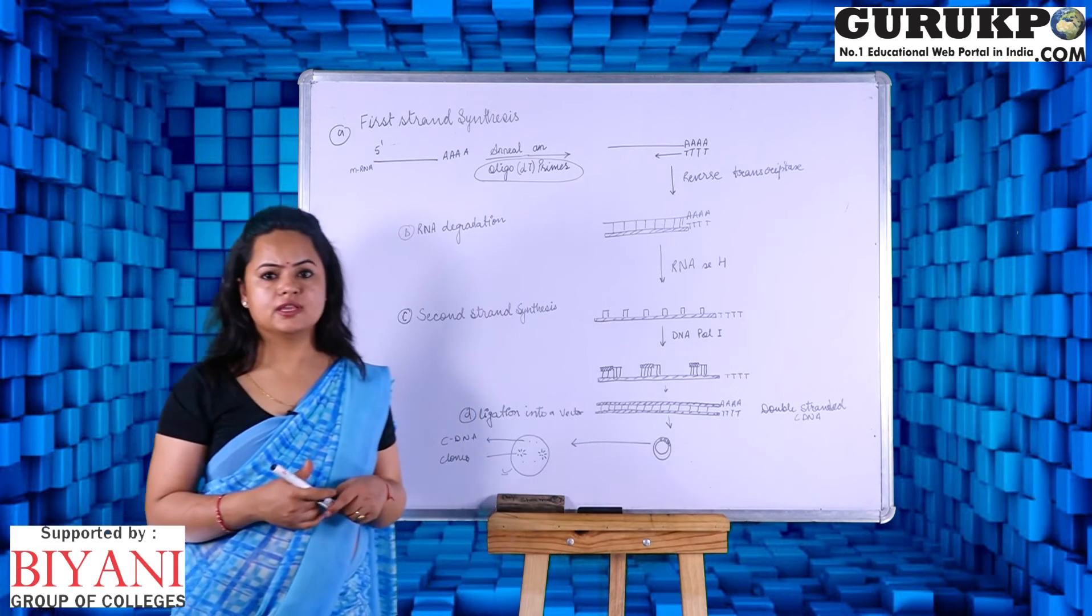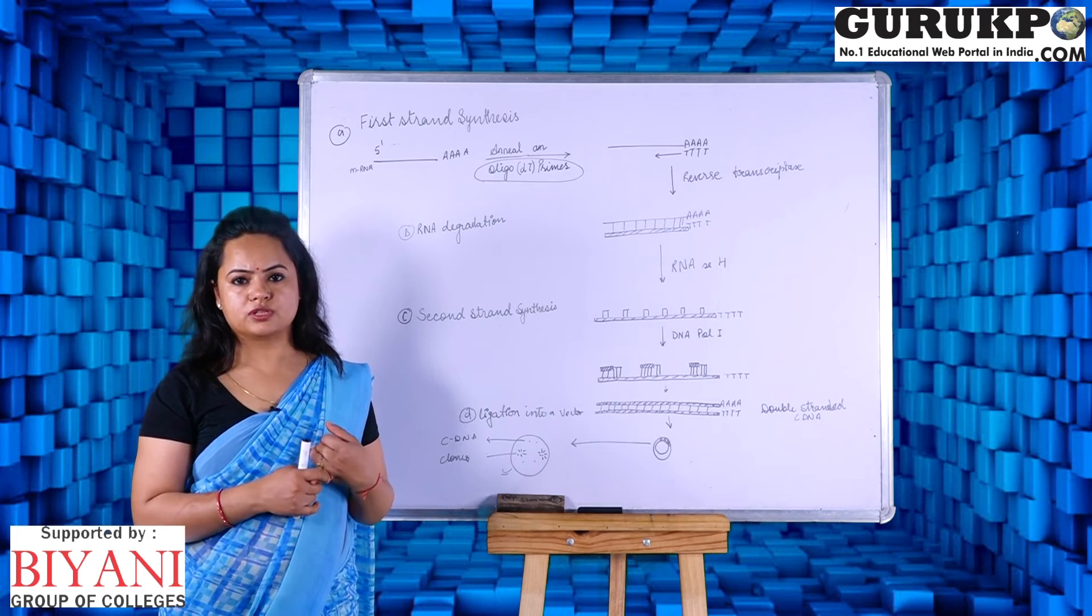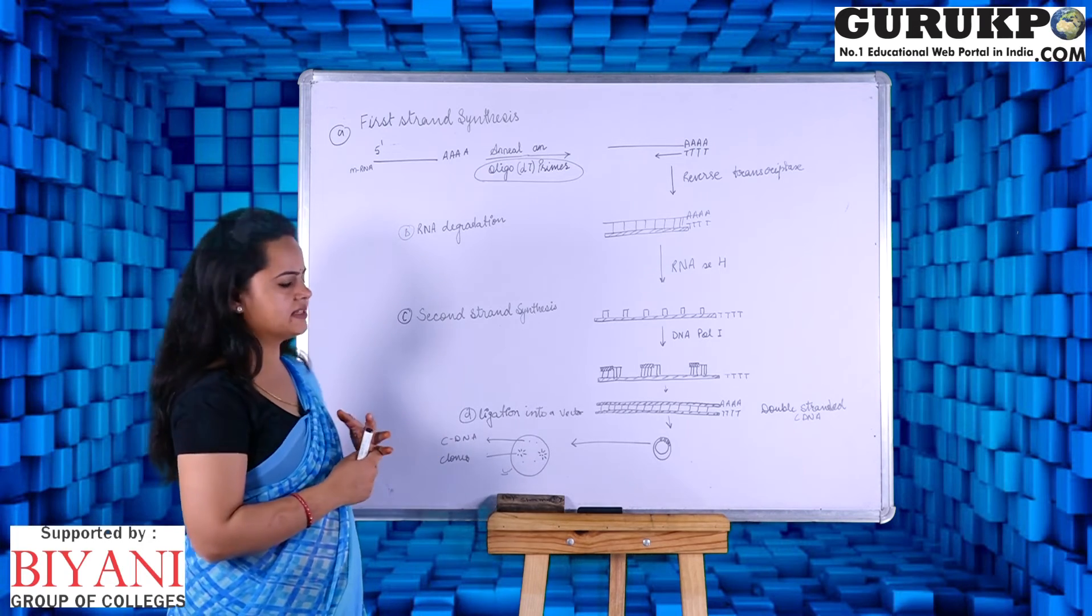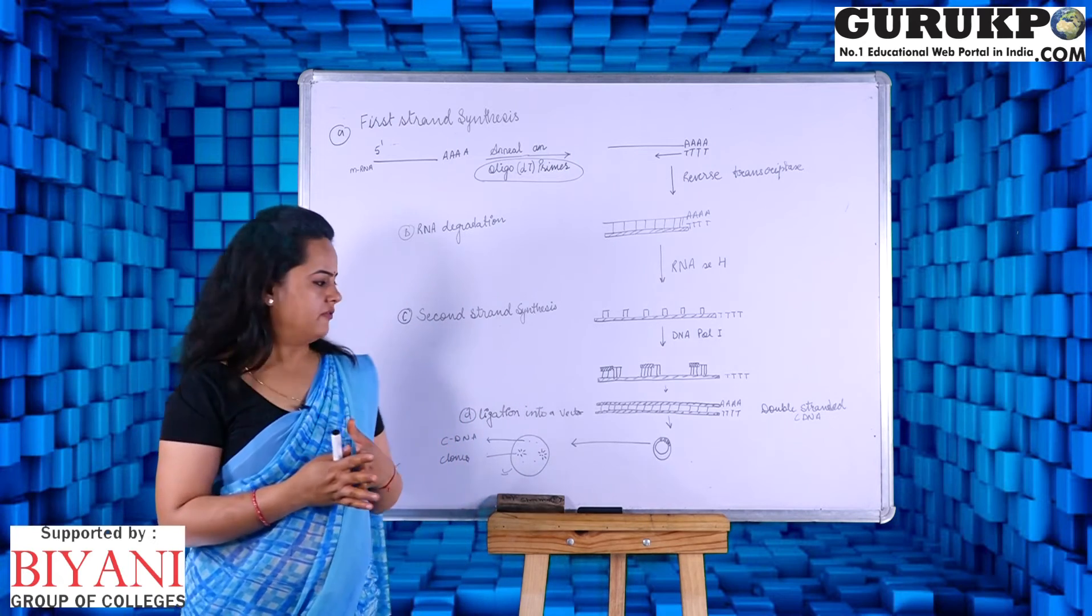This can be easily ligated to a vector of our own choice. According to the size, we can use a plasmid vector, we can use a phagemid, we can use a cosmid. If the fragment size is higher than 64 kB, then we will go for some cosmid or newly designed vectors.